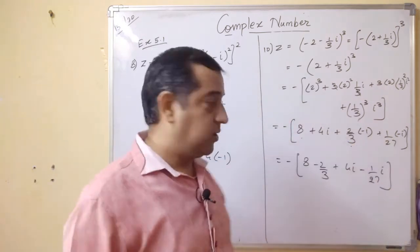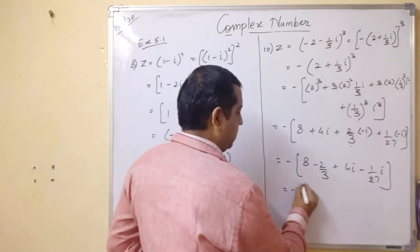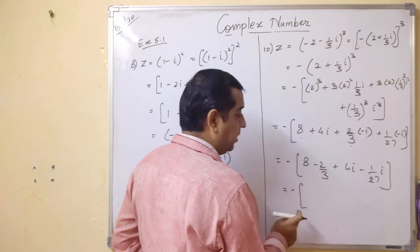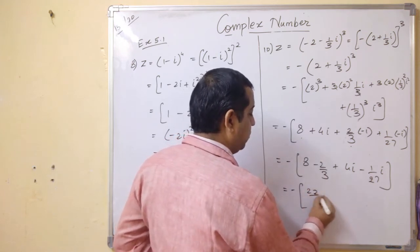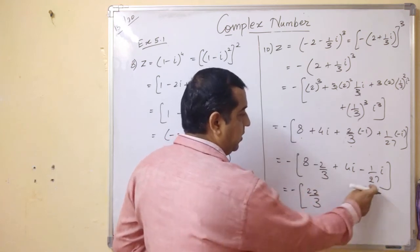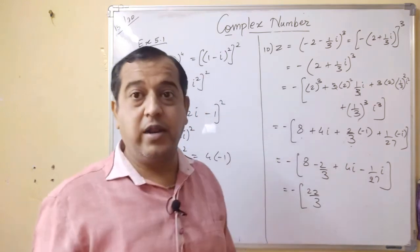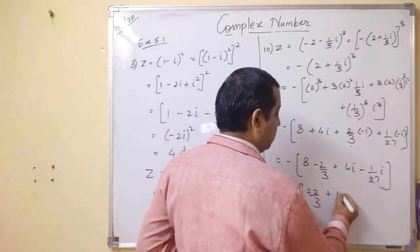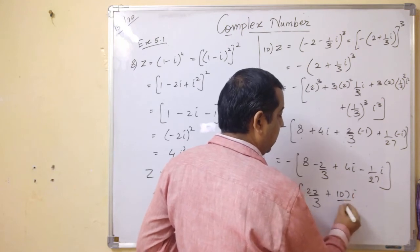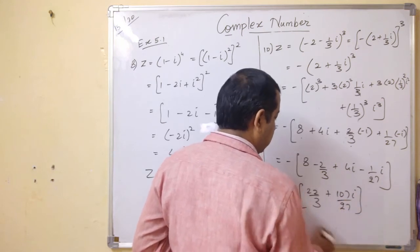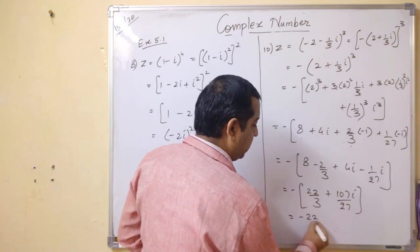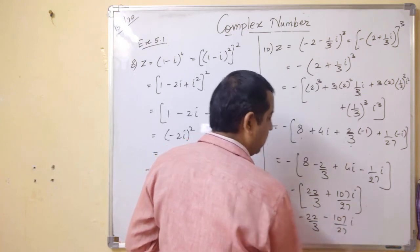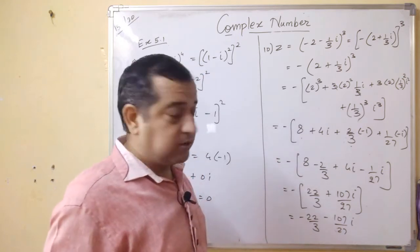This is 4i and this is minus 1 by 27 i. This is minus. 3 into 8 is 24, 24 minus 2. This is 22 by 3. And this, 27 into 4 gives you 108, 108 minus 1 is 107. So plus 107i upon 27. Taking minus outside you get minus 22 by 3 minus 107 by 27 i.